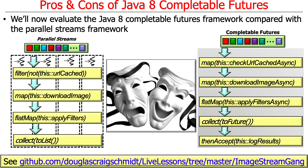Here we'll compare and contrast the completable futures framework, on the right, to the parallel streams implementation. Glancing at them at a high level, they actually look kind of the same. In the parallel streams model, we have a stream of URLs, we filter out things that are already cached, we download them synchronously in different threads, we apply the filters synchronously in different threads, and we collect the results into a list of filtered, downloaded, and stored images.